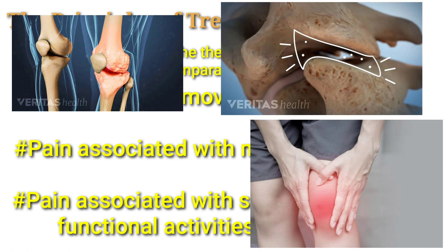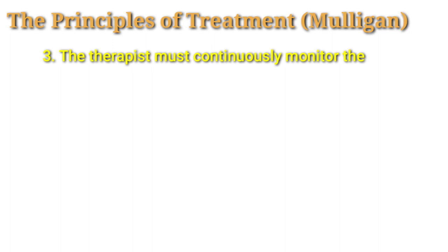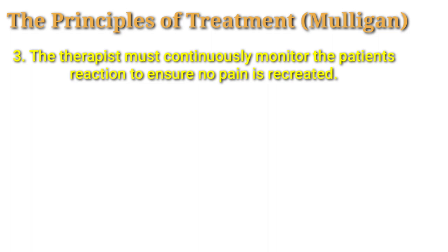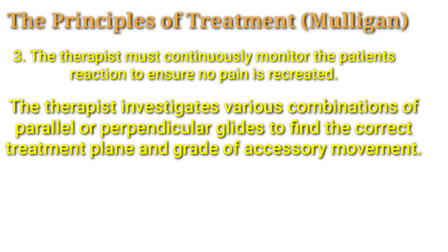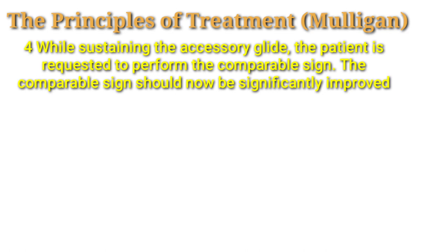Number three: the therapist must continuously monitor the patient's reaction to ensure no pain is recreated. Number four: the therapist will investigate various combinations of parallel or perpendicular glide to find the correct treatment plan and grades of the accessory movement. The patient is then requested to perform the comparable sign, which should now be significantly improved.